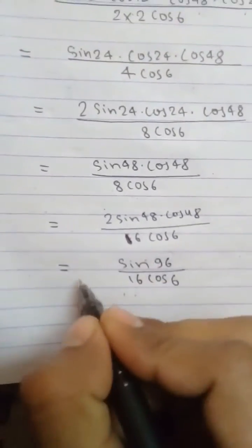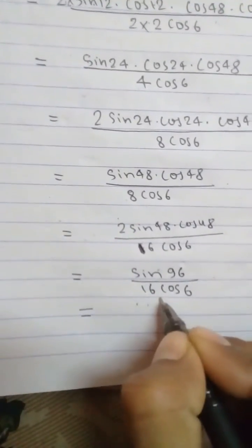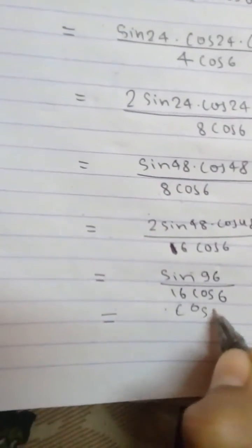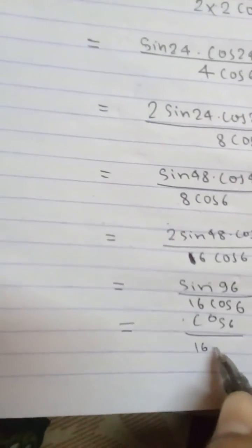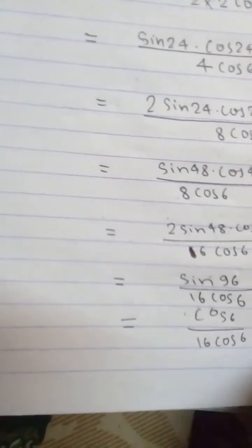This implies this will become cos6 by 16cos6, which equals 1 by 16.